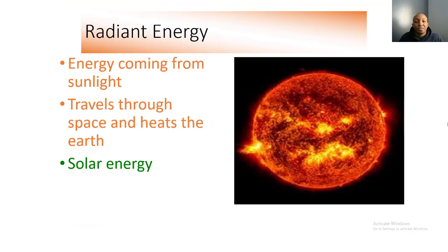Radiant energy is energy that comes from sunlight and travels through space to heat the earth. Our main form of radiant energy is solar energy, also known as sunlight. Since it's winter time where we are, we're not feeling too much radiant energy now, but when spring and summer come around we'll feel a lot of it.